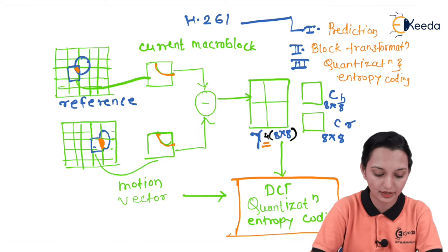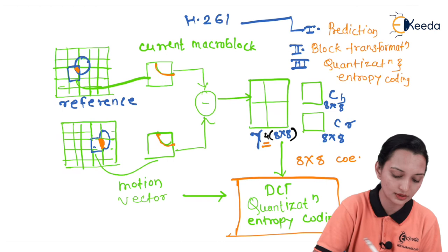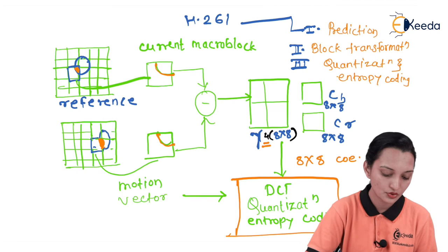The next step after prediction is the same as JPEG: perform DCT, quantization, and entropy coding. In the H.261 block diagram, step one is prediction (done on the motion part), the difference is provided for step two — block transformation — and step three is quantization and entropy. The steps for MPEG and JPEG are the same from block transformation onward. From block transformation we get 8x8 coefficients, on which we perform DCT, quantization, and entropy coding.